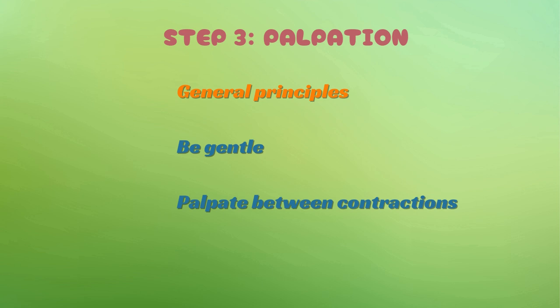Now that inspection is complete, let's move on to palpation. Always use the palmar surface of your fingers rather than the fingertips, and avoid excessive pressure — be gentle. If the patient is experiencing Braxton Hicks contractions, wait for the uterus to relax before proceeding, as palpating during a contraction can give misleading findings. Always stand facing the patient while performing all obstetric grips, except for the fourth maneuver where you face the patient's feet.